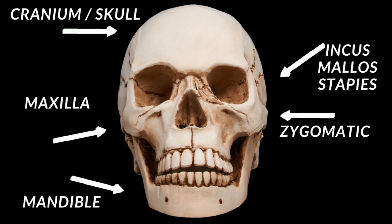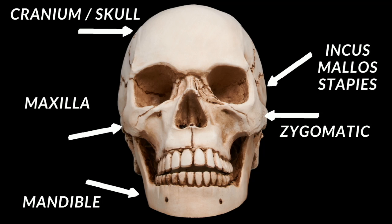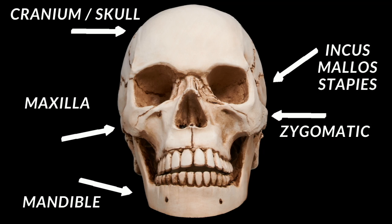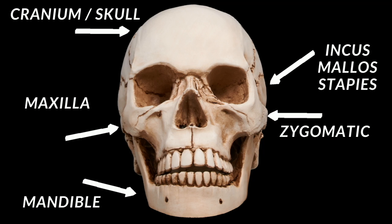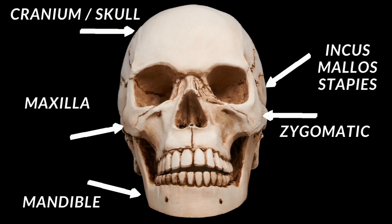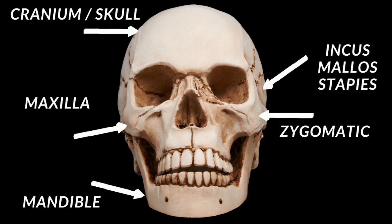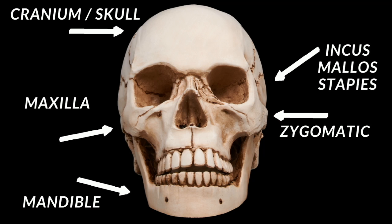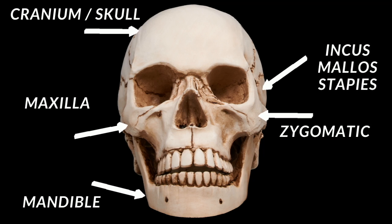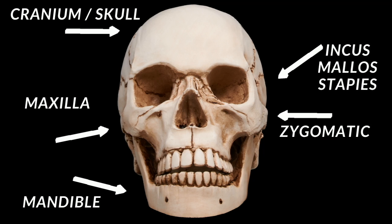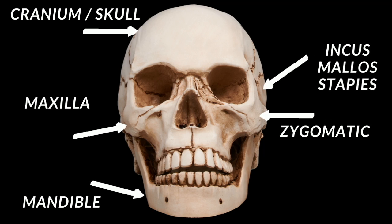Next you have your mandible, or your lower jawbone. A funny way to remember this is that if a man's mouth is moving, he's just sharing some bull — mandible. Or you can remember that M equals mandible and M equals mastication, which is chewing your food. You do this as your mandible moves up and down — you masticate your food.